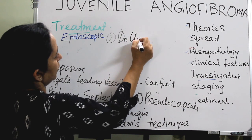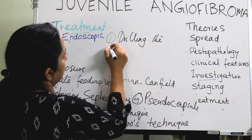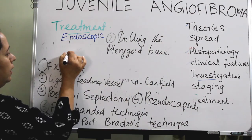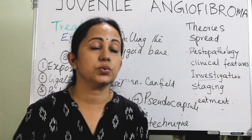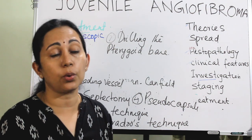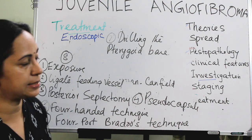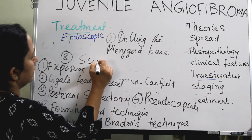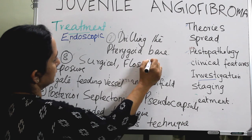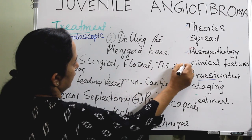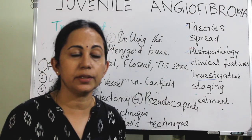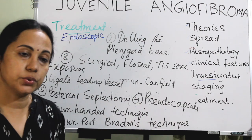Drilling the pterygoid base at the end of the procedure is very important to prevent recurrence. The operating room must have access to a blood bank and adequate availability of hemostatic materials such as Surgicel, FloSeal, or similar agents.